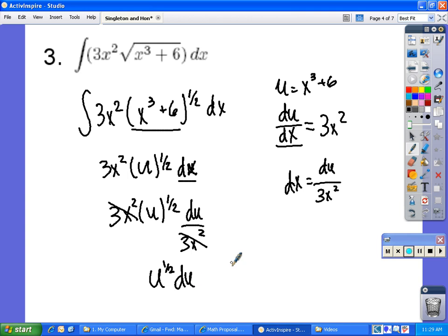We then integrate that and we come up with u to the 3 half over 3 half plus c. Then we plug in and we end up having 2 thirds x to the 3rd plus 6 to the 3 half plus c.